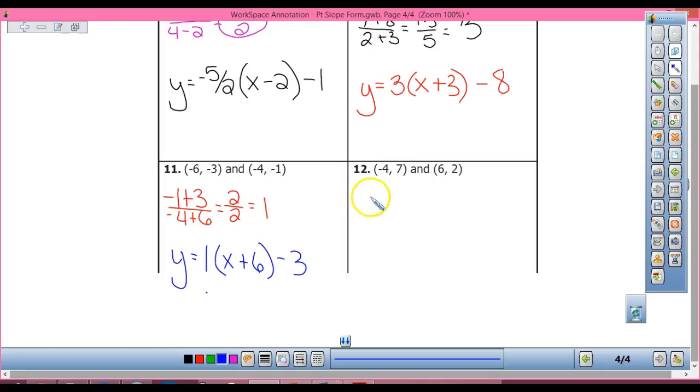Tyler, find the slope for 12. 2 minus negative 4, 7 minus 4. So on top I have 6 over 3, which gives me 2. So point-slope form, Timothy. Y equals 3 times X plus 3 minus 8. Okay, not so bad, right? It's pretty self-explanatory as long as you've got it.